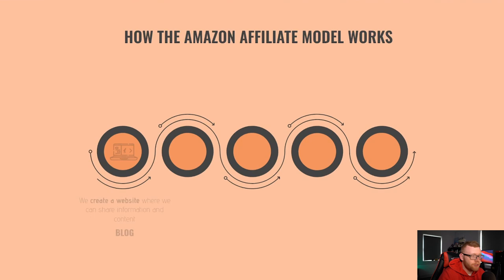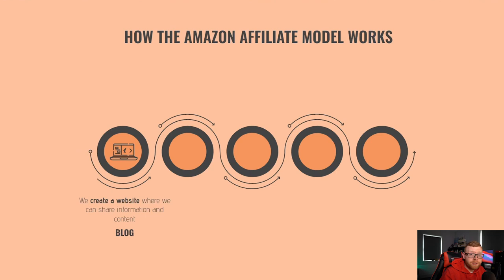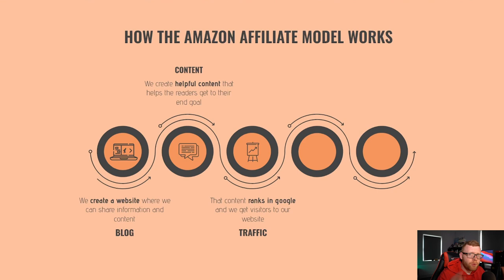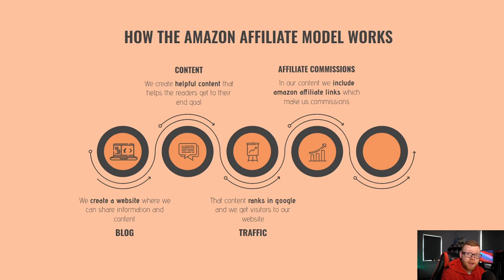So how does the Amazon affiliate model specifically work? First, we create a website where we share informational articles — like how-to articles or best-X-for-Y content for different products. We create helpful content that helps readers get to their end goal, really providing informational content that helps people on the web. Then we get that content ranked in Google — that's where most of our traffic comes from. We can also get traffic from Pinterest, Facebook, or other search engines, but Google is the main traffic driver.